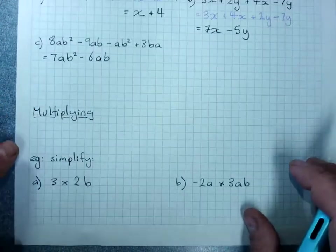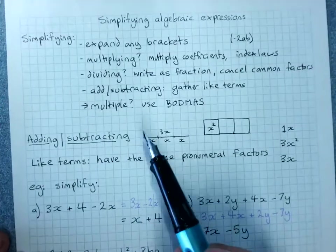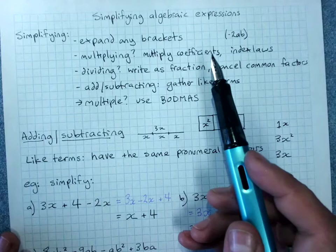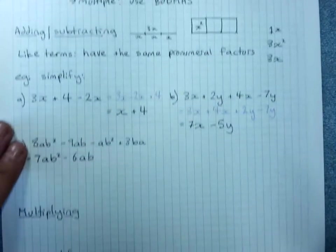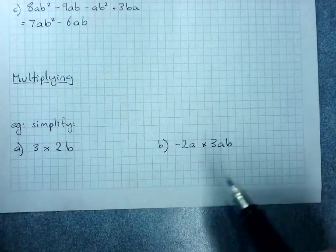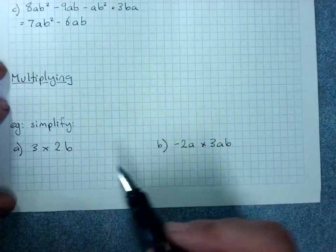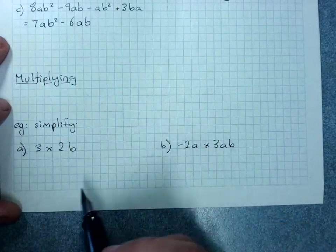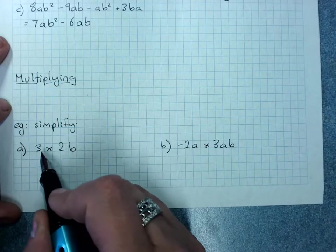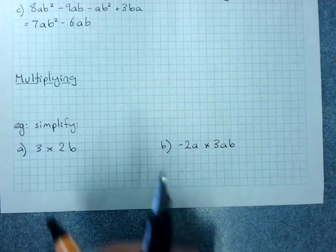When multiplying, as I said, our rules are multiply the coefficients, then use the index laws to multiply pronumerals. This is because you can rearrange multiplication.